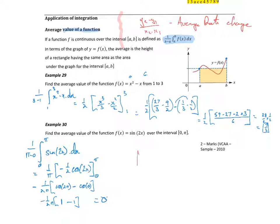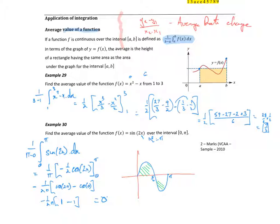We get negative 1 on 2π times cos(2π) is 1, cos(0) is 1, so we get 0. How does that match our graph? sin(2x) — the period is 2π on 2 which is π, so the areas cancel out and the average value is 0. With trig, that middle line is the average value — we call it the mean line. So it all ties in.